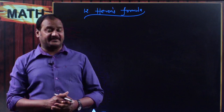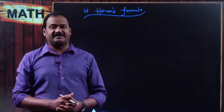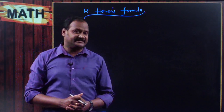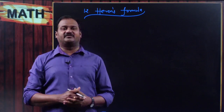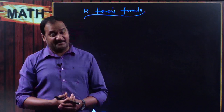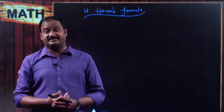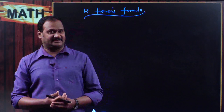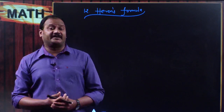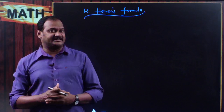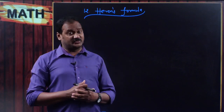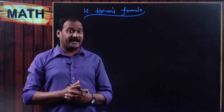What does 'all three sides are given' mean? When you have a triangle and it is a right-angled triangle, then the area is equal to half into base into corresponding height. But when the triangle is a scalene triangle exclusively, how do you find the area when all three sides are given? That is the significance of Heron's formula.